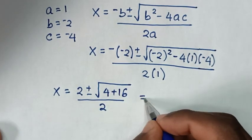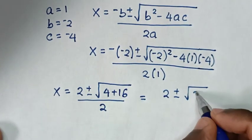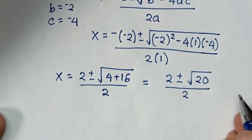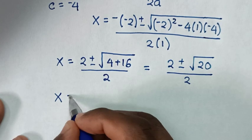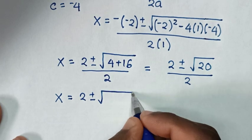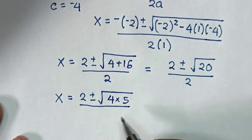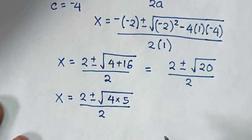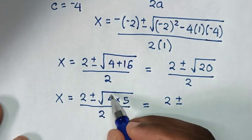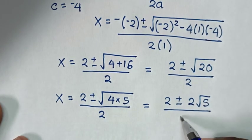So it will be equal to 2 plus or minus square root of 4 plus 16, which is 20, over 2. Then in the next step, x is equal to 2 plus or minus square root of 20, which is the same as 4 times 5, over 2. Then it will be equal to 2 plus or minus square root of 4, which is 2, times square root of 5, over 2.